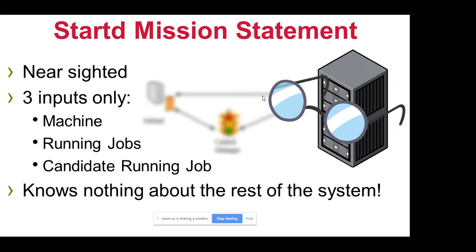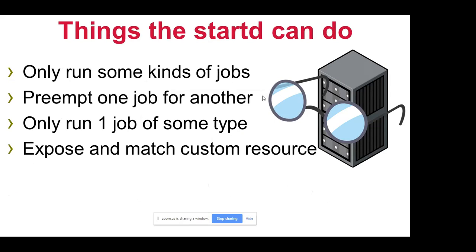With its local policy, the startd can be configured to run only certain job types — for example, only chemistry jobs. It can preempt running jobs in favor of higher-priority jobs, such as preempting a physics job when a chemistry job arrives. It can also expose and match custom resources, such as advertising a particular type of GPU.